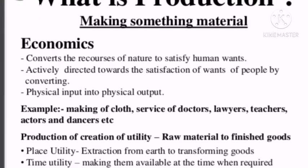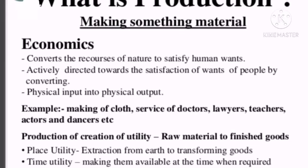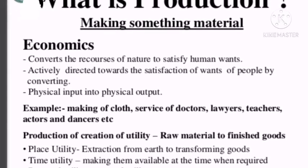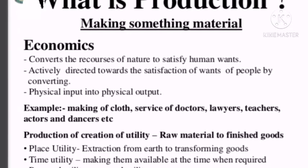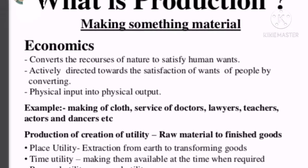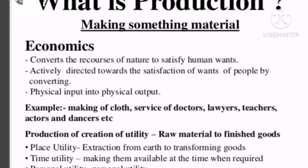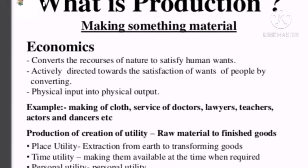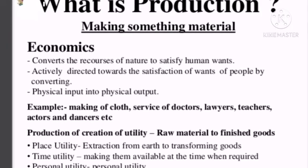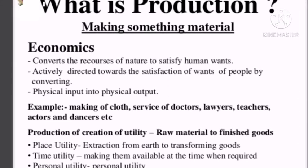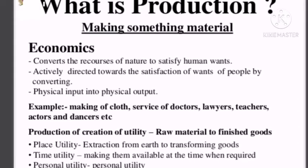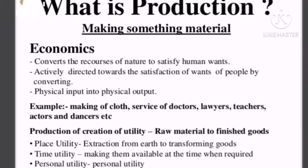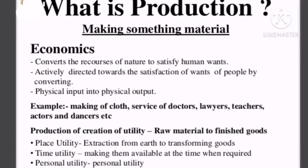Production involves three things. First, the activity must be for the satisfaction of other people's wants. For example, if a farmer produces rice for self-consumption, it is not a production activity. Second, the other people's wants must be satisfied through the process of exchange. For example, if a doctor does service without receiving a fee in exchange, his service cannot be treated as production.